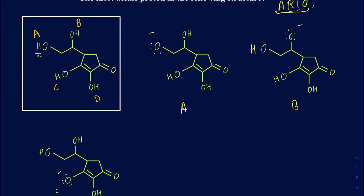When I focus on conjugate base A, you get a negative charge on this oxygen, and it's really not conjugated anywhere — there's no resonance structure for A. For conjugate base B, this lone pair on the oxygen is just going to be localized only on the oxygen; it doesn't have any double bond close by to be delocalized. So that's also no resonance.